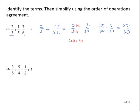27 over 30. The GCF, the greatest common factor, is 9, I'm sorry, is 3. So that would give me 3 times 9 over 3 times 10, removing the common factor of 3, 9 tenths.